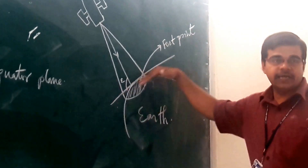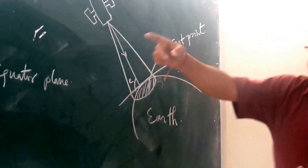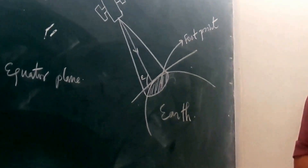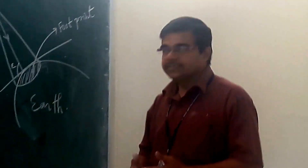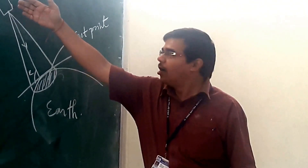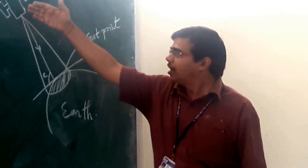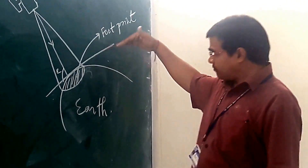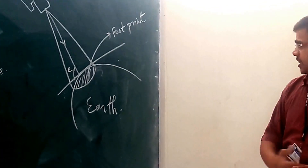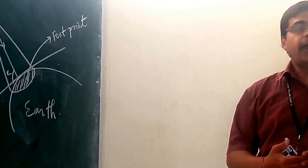The elevation angle is the angle made by the signal transmitted from the satellite — from the center of that signal to the tangent to the earth. That angle is called the elevation angle.